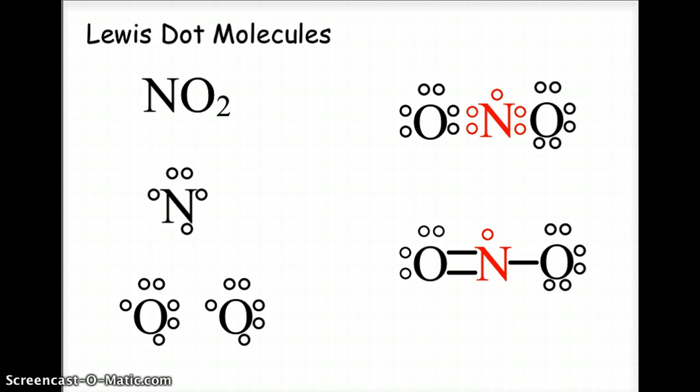So, we are going to look at a couple of these exceptions, beginning with NO2 nitrogen dioxide. Now, in order for nitrogen dioxide to work, we actually have to use a different set of rules for the middle atom. And what we're going to do is we're going to satisfy the rule of octet for both of the oxygens, but the nitrogen is going to be one short.